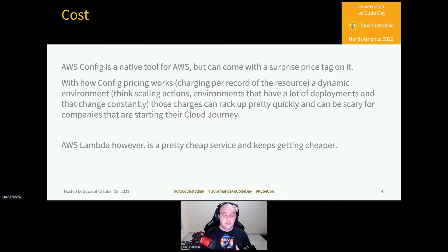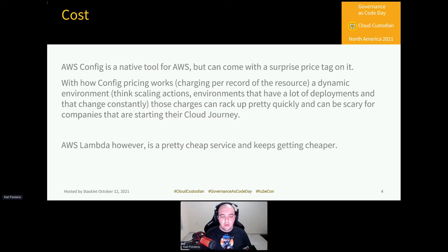AWS Lambda, however, is a pretty cheap service and keeps getting cheaper. Last year there was a significant change — billing moved down to the millisecond instead of per 100 milliseconds, which decreased Lambda costs across the board. There's also mention that Graviton-powered Lambdas may be coming, which would further decrease costs for Cloud Custodian as well.